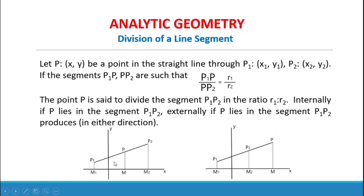In this diagram, we have P1P2 and point P lies in between the segment P1P2, therefore it is internal division. In the second diagram, we have P1P2 and the point P lies outside the line segment P1P2, and that is external division.